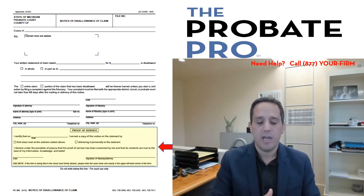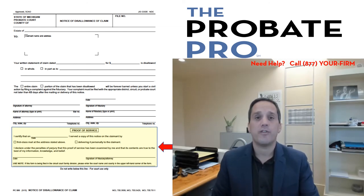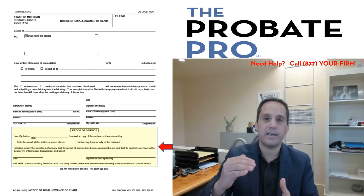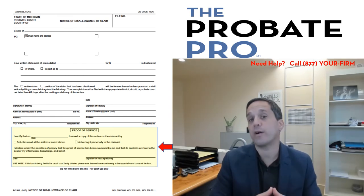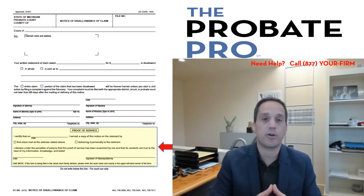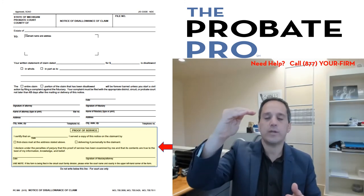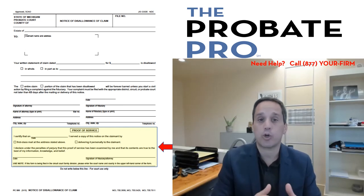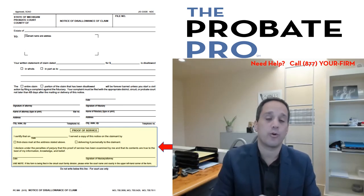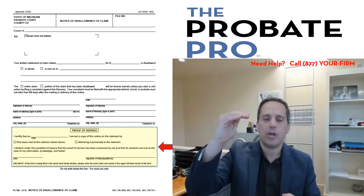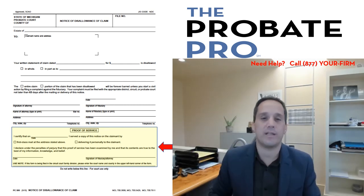Under Michigan statute, there is a prioritization of how the assets of the estate get paid — we call that the priority of claim. Under Michigan statute 700.3805, it identifies, based on the amount of assets, who is going to get paid based on whether you are a creditor, an heir, or an administrative expense. Carefully reviewing that statute can tell you whether a creditor claim, even if allowed, is ever going to get paid by the probate estate.